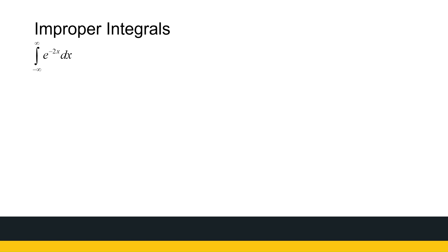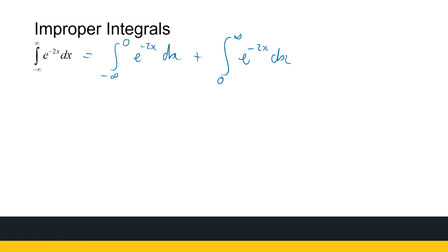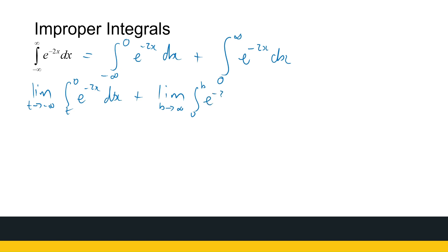Let's take the example of e to the power minus 2x from minus infinity to infinity. We'll break it into two integrals: from minus infinity to 0 of e to the power minus 2x dx, plus from 0 to infinity of e to the power minus 2x dx. We choose 0 because it's a convenient number to work with. This becomes the limit as t approaches minus infinity of the integral from t to 0, plus the limit as b approaches infinity of the integral from 0 to b, of e to the power minus 2x dx.